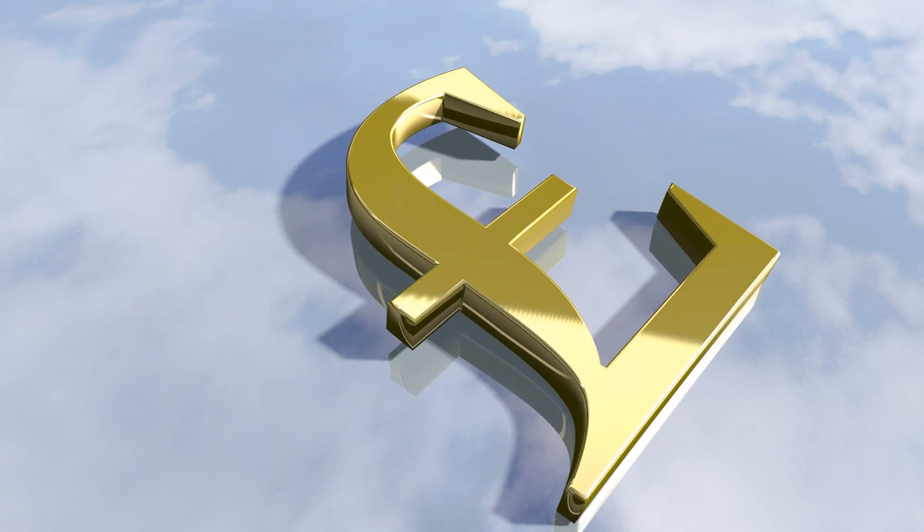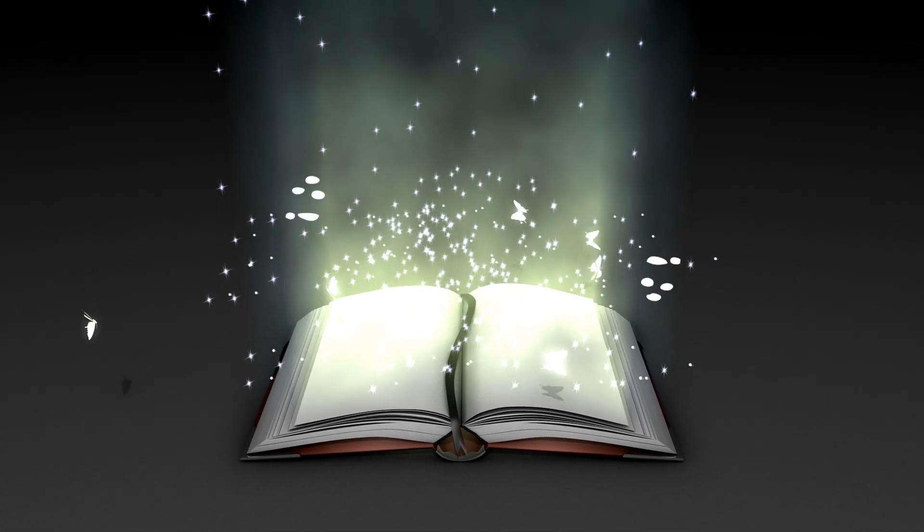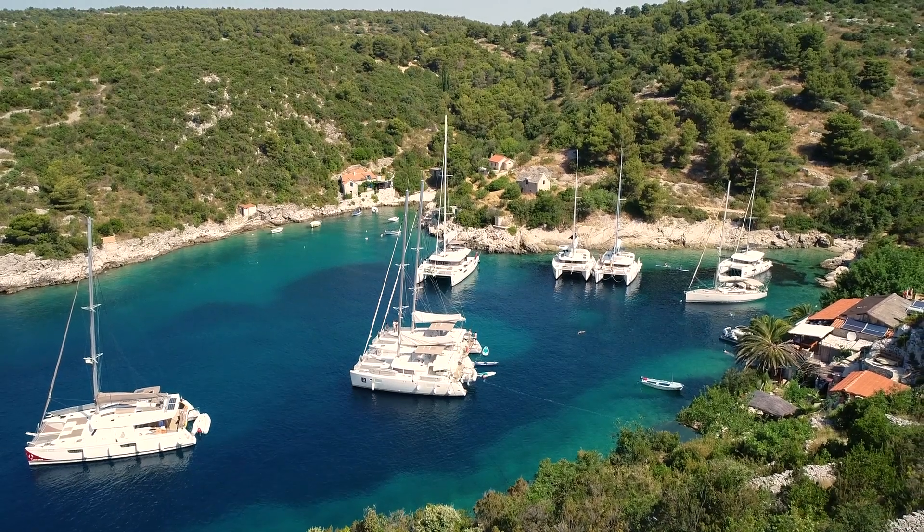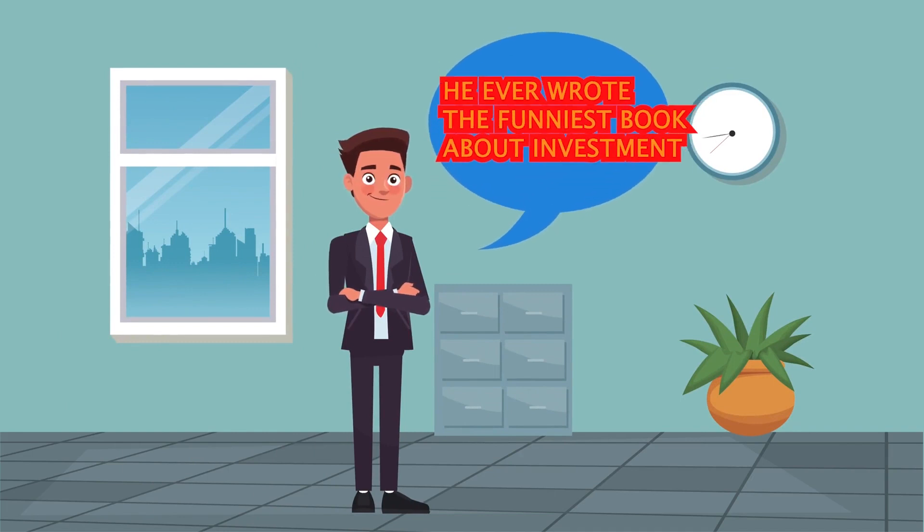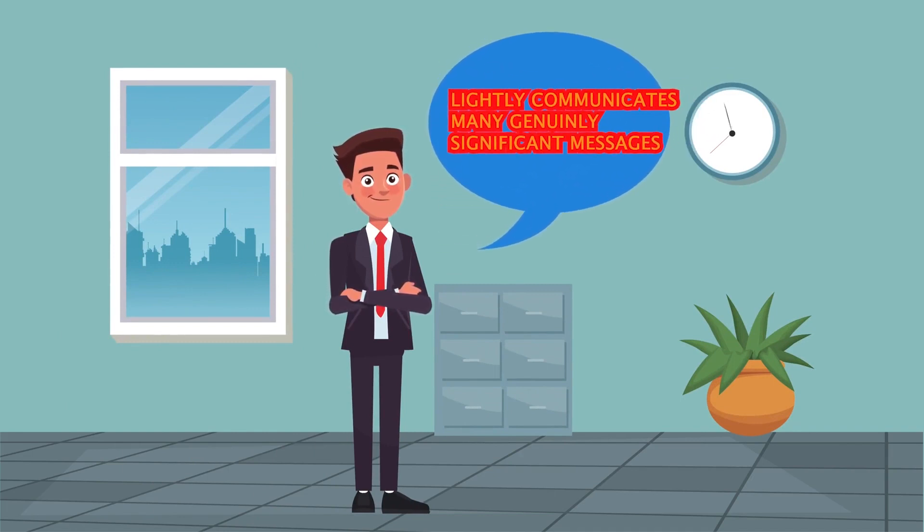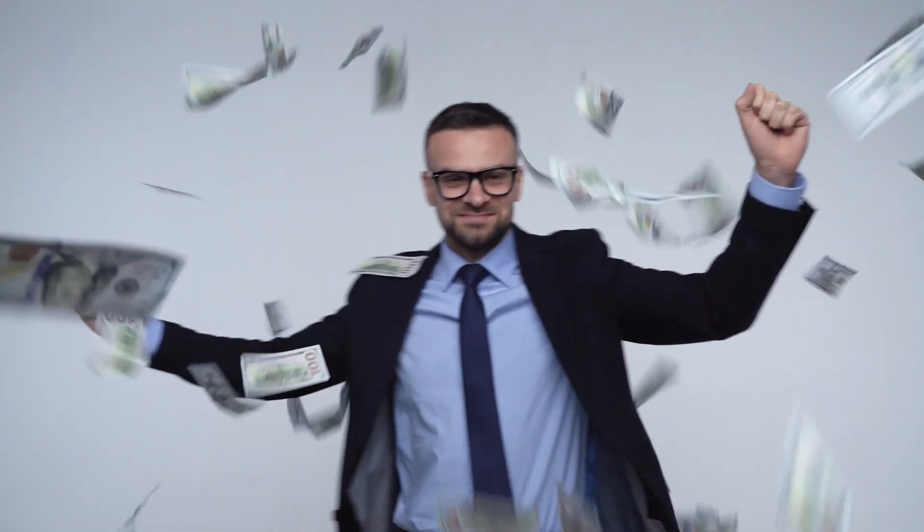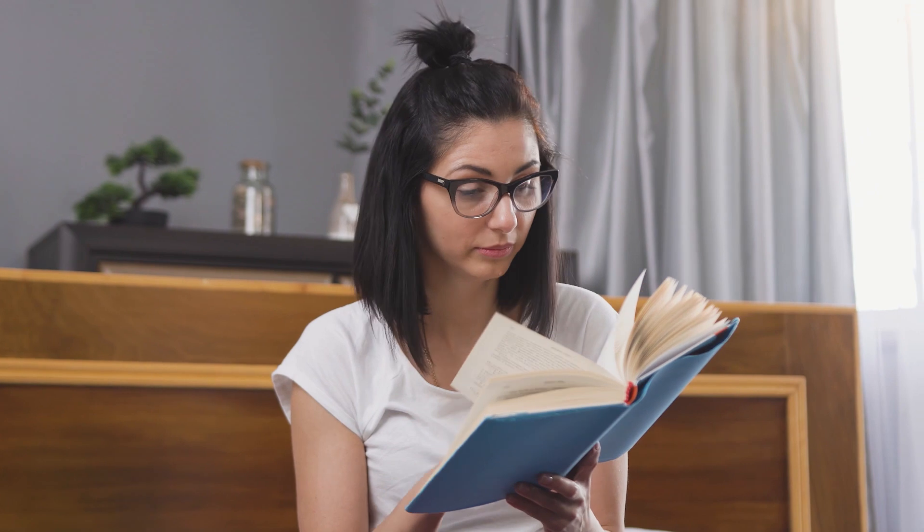Where Are the Customers' Yachts? This classic satirizes Wall Street with fun. The title derives from a visitor to New York who was told that the fine boats in the harbor belonged to Wall Street bankers. He questioned where the bankers' clientele stored their boats. The answer is nowhere. Buffett termed it the funniest book about investment that lightly communicates many generally significant messages. This book offers contrarian advice and an honest look at Wall Street where brokers become rich and customers go broke.